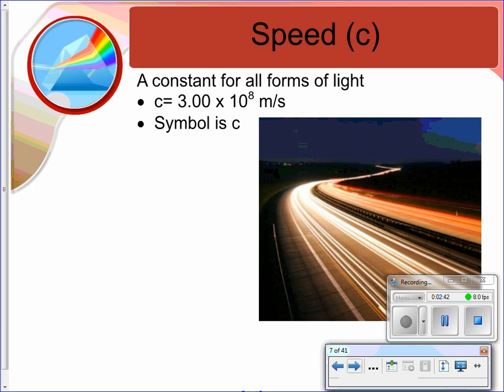And speed, the last idea behind waves of light, is a constant for all forms of light. The speed of light is 3.00 times 10 to the 8th meters per second, and that's pretty quick. But you have to think of it in terms of the vastness of space in the universe. If you've got light traveling from a star that's hundreds of billions of miles away, it's going to take a long time for that light to reach us, which is why when you're looking at a star, you're seeing light from millions of years ago. Light can only travel this fast, 3.00 times 10 to the 8th meters per second. Our symbol for that is C.